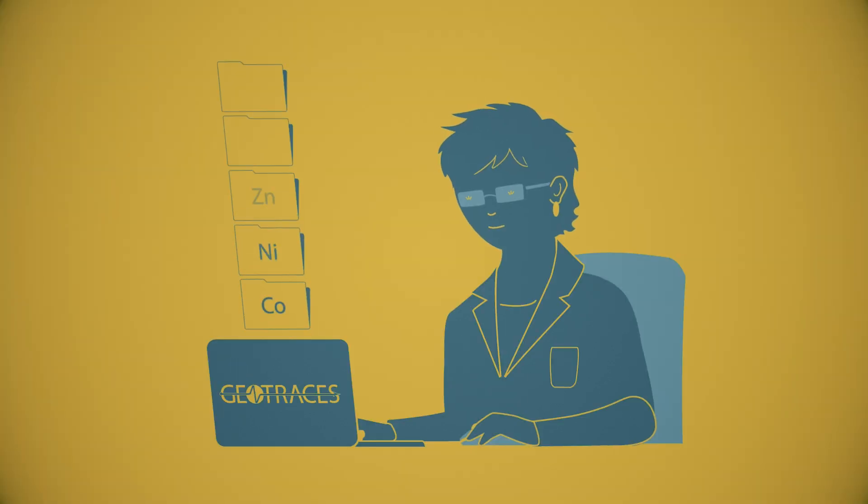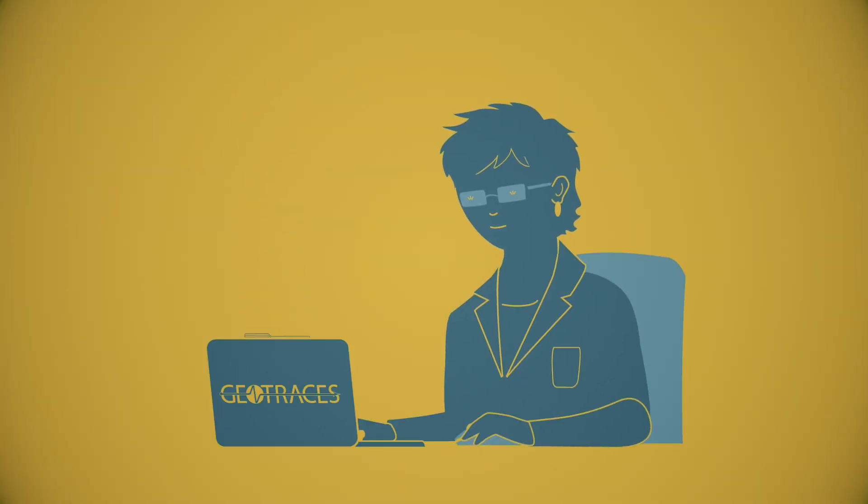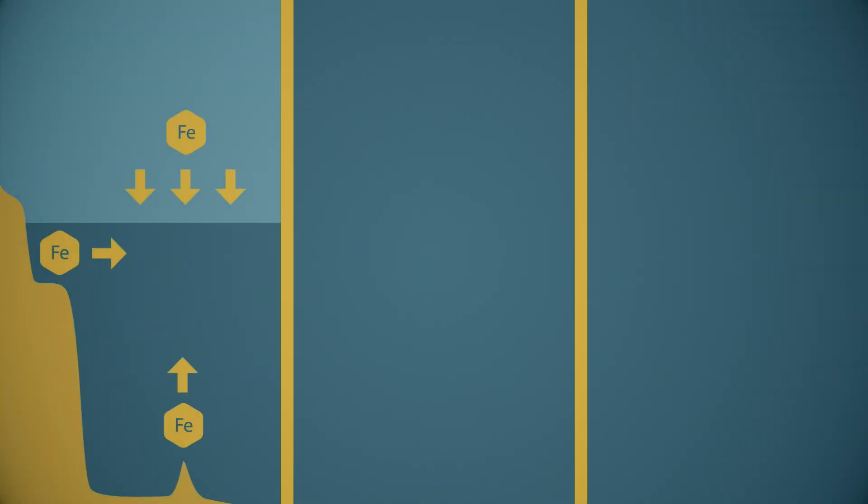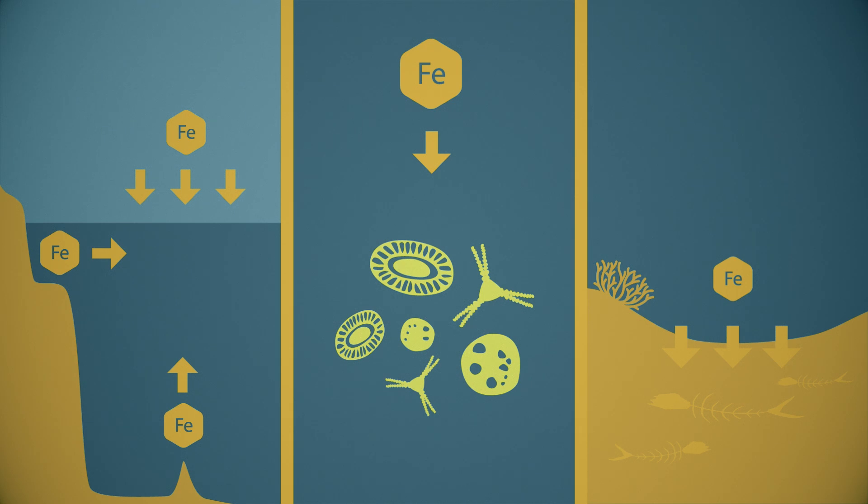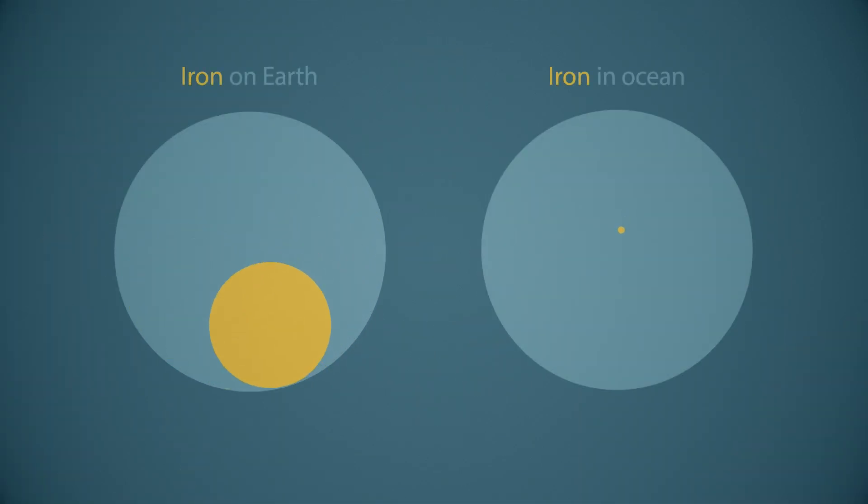Because the health and productivity of marine ecosystems depends on the availability of iron and other trace nutrients, it is very important for scientists to take an inventory of them to identify their sources, transformations and how they sink in the ocean. In contrast to its abundance on land, iron is very scarce in seawater.